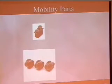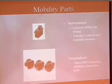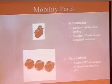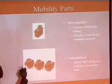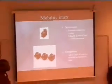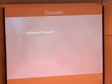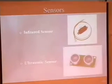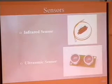This is the mobility section with servo motors and omni wheels, allowing 360 degrees of motion. These are the parts that actually roll — when the wheels roll, these little rollers also roll. For sensors, everyone used the same sensors: infrared sensors and ultrasonic sensors.